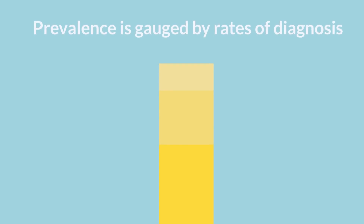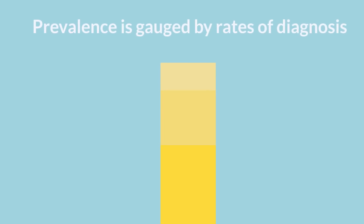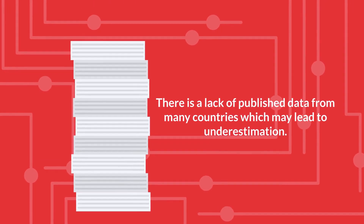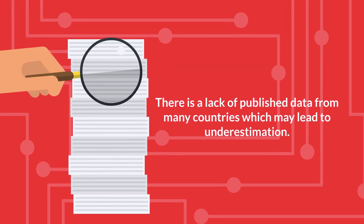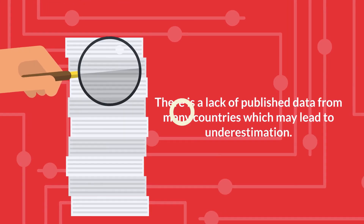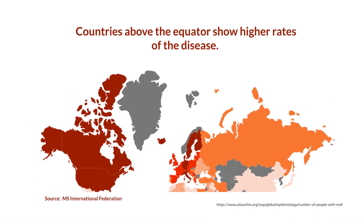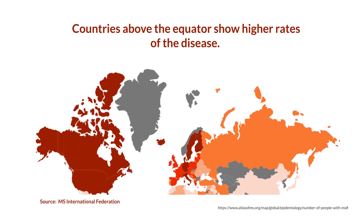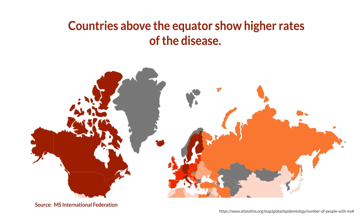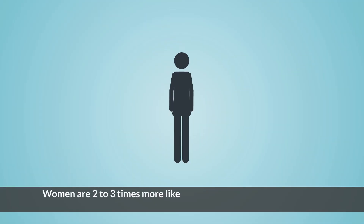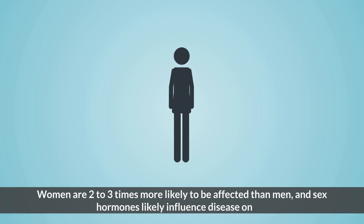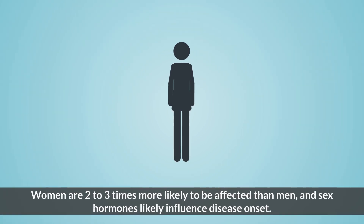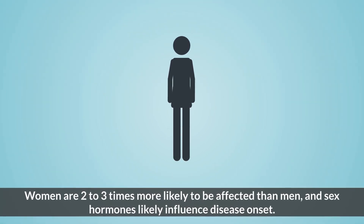Prevalence is gauged by rates of diagnosis, but there is a lack of published data from many countries, which may lead to underestimation. Disease burden follows a latitudinal gradient in which countries above the equator show higher rates of the disease. Women are two to three times more likely to be affected than men, and sex hormones likely influence the onset of the disease.